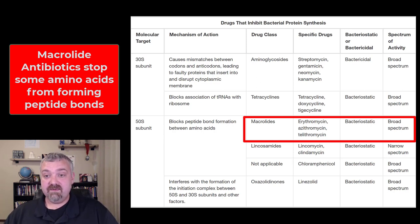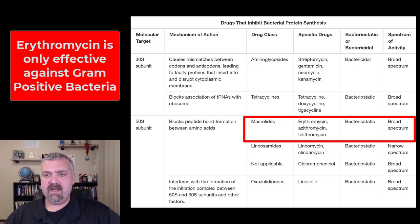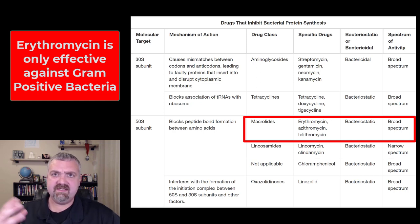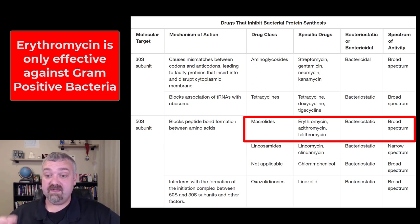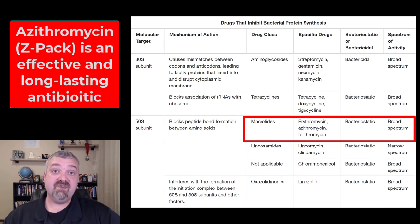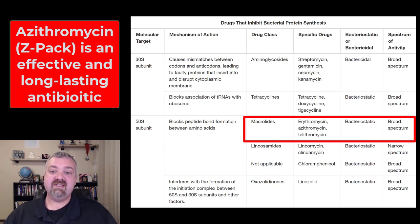Erythromycin is an important antibiotic, but it's only useful against gram positives. It isn't as broad spectrum because it can't enter gram-negative bacteria the same way that azithromycin can. So let's talk about azithromycin — you've probably heard of it. It's the Z-Pak, right? The advantage of azithromycin is that it's much more broad spectrum than erythromycin, but the real advantage is its half-life.